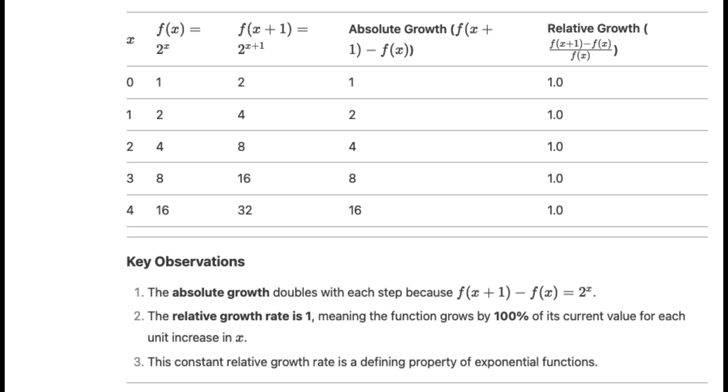For example, consider the exponential function f(x) equals 2 to the power of x. From the following table, we can see that the function always grows proportionally to its current value. The relative growth rate is 1, meaning the function grows by 100% of its current value for each unit increase in x.